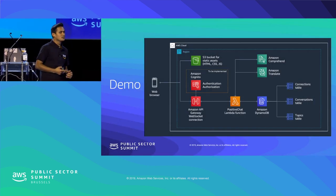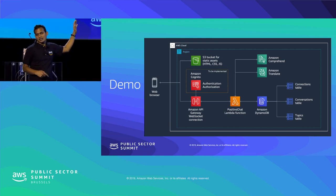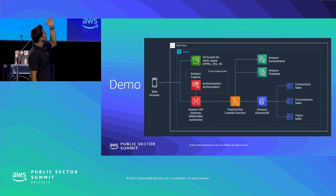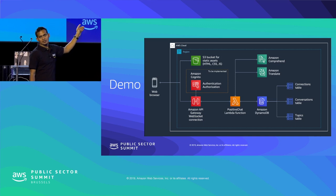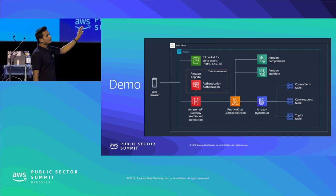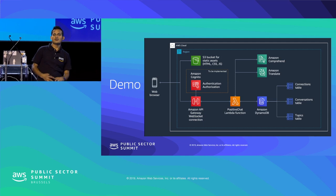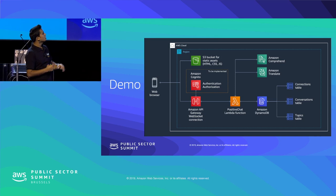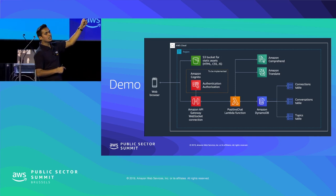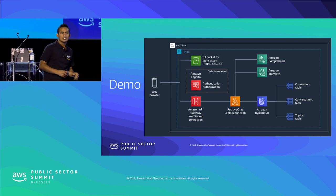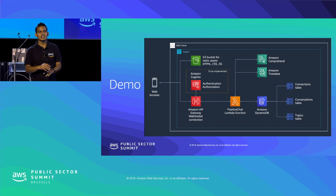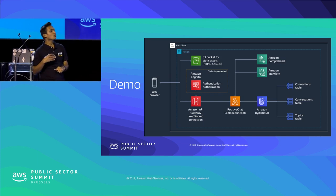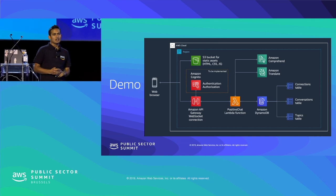The demo shows a simple serverless architecture: static HTML, JavaScript, and CSS files are served from S3. An API call goes to API Gateway, which triggers a Lambda function. The Lambda function calls Amazon Comprehend — a natural language processing service — to detect sentiment, and Amazon Translate to translate the message to a selected language. The application is a positive chat app that only displays positive content and blocks negative messages.